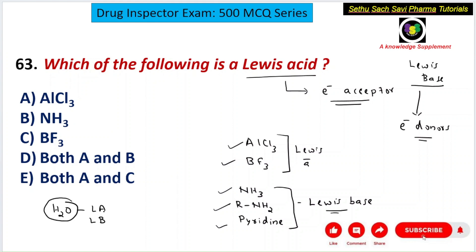Coming back to the question: which of the following is a Lewis acid? Aluminium chloride is a Lewis acid, boron trifluoride is also a Lewis acid, whereas ammonia is a Lewis base. The correct answer is both A and C, that is choice E.